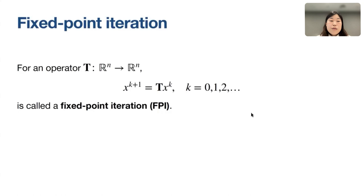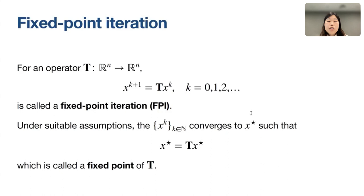The fixed point iteration is defined as follows: for an operator T which takes an n-dimensional vector as input and outputs an n-dimensional vector, if we start from an initial iterate x0 and repeatedly apply operator T, that is called a fixed point iteration. Under suitable assumptions, the iterates xk will converge to x-star, the fixed point of T.